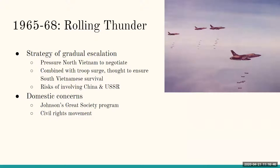Vietnam officially kicks off in American history in 1965, though we were involved there from a much earlier time. 1965 also kicked off Operation Rolling Thunder, the first major bombing campaign the U.S. had enacted since World War Two. Rolling Thunder was based on a strategy of gradual escalation and had to balance differing problems. Rolling Thunder's goal was to pressure North Vietnam to negotiate. Targets would be hit gradually across all of Vietnam, especially the Ho Chi Minh Trail. Combined with the troop surge — which raised the number of American soldiers from 75,000 advisors to 200,000 combat troops — this was thought to be enough to ensure South Vietnamese survival, and South Vietnam did not collapse during Rolling Thunder.